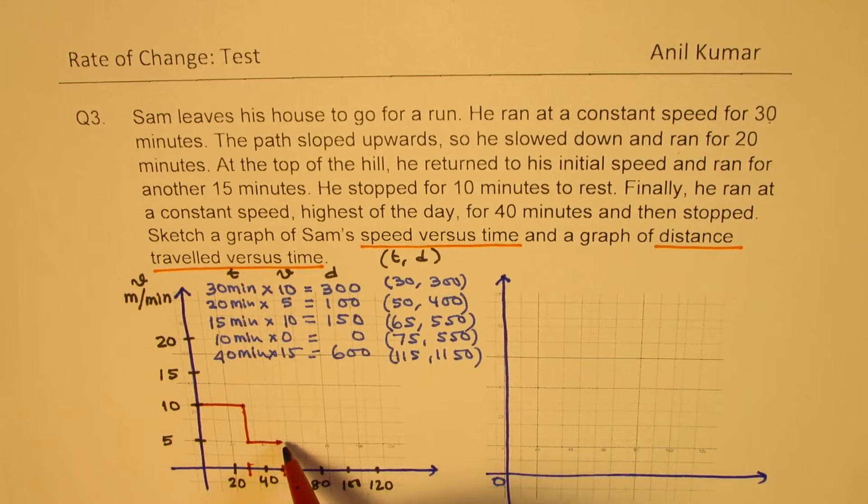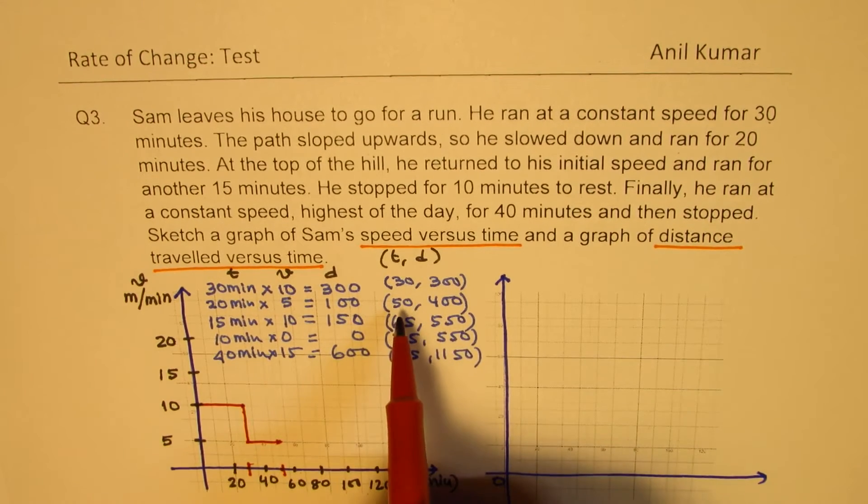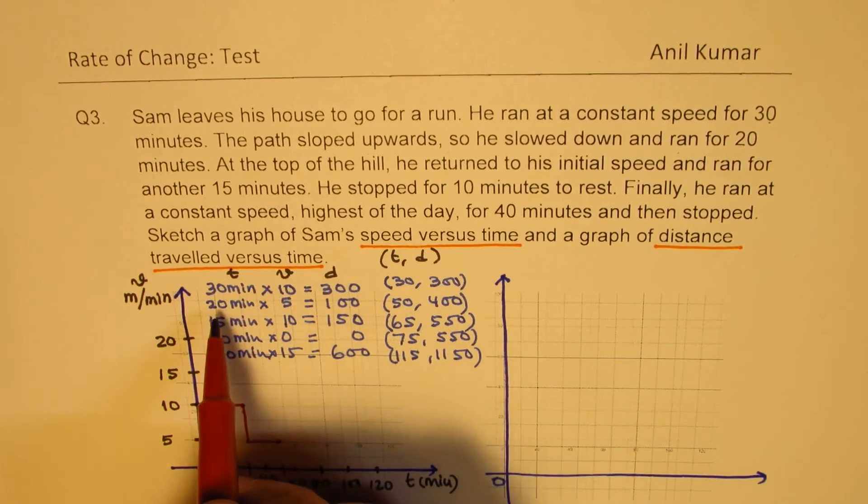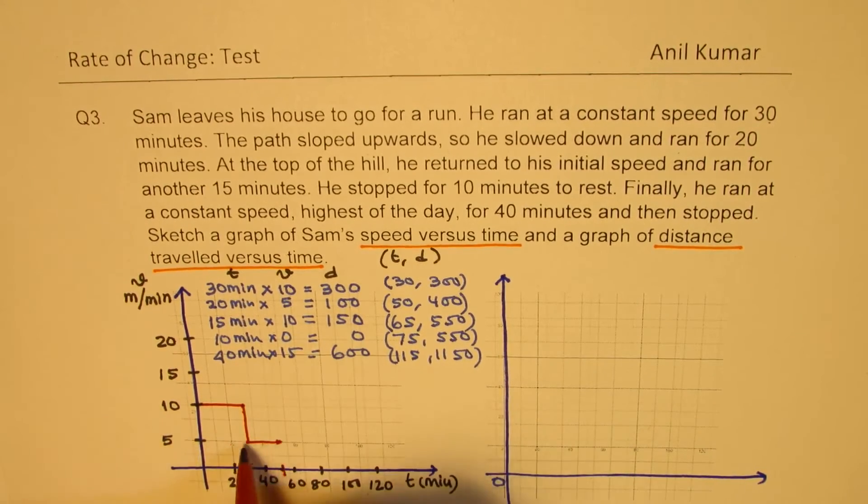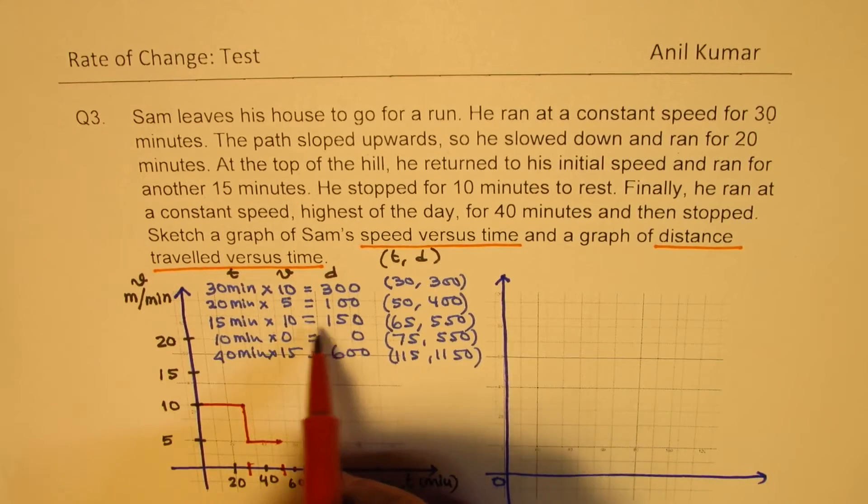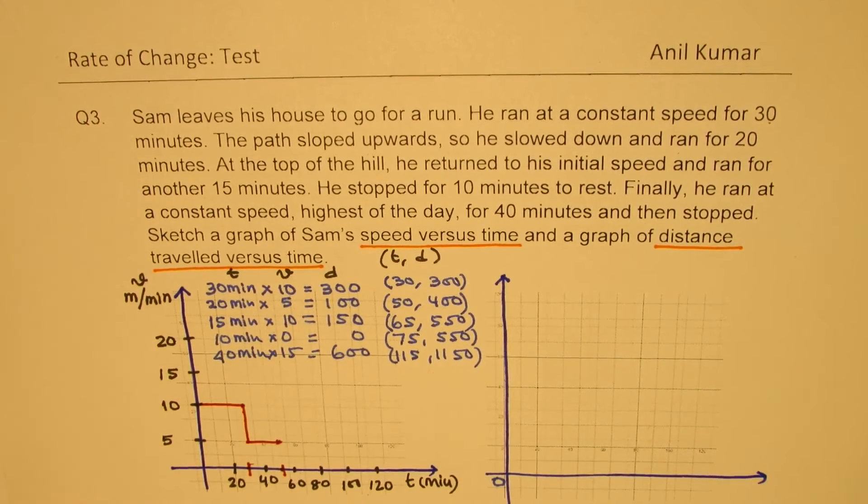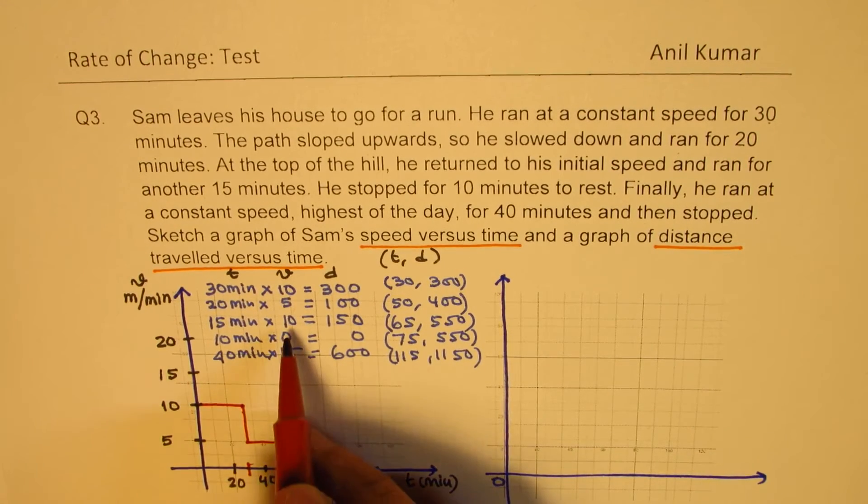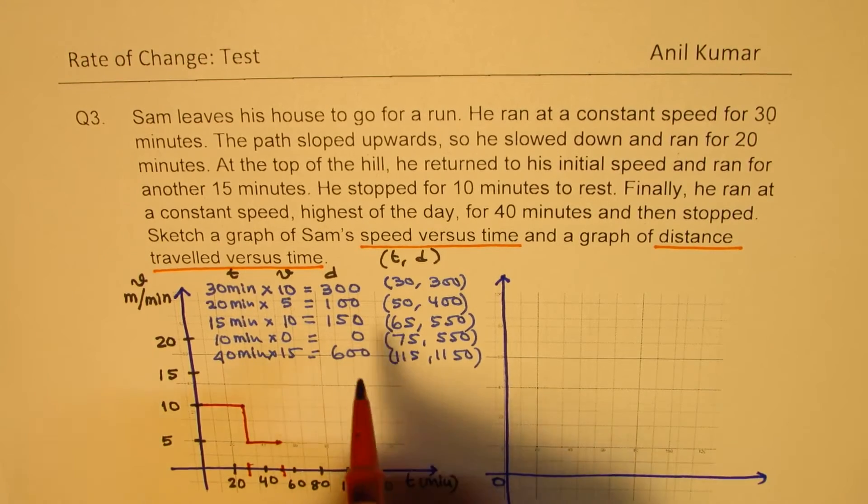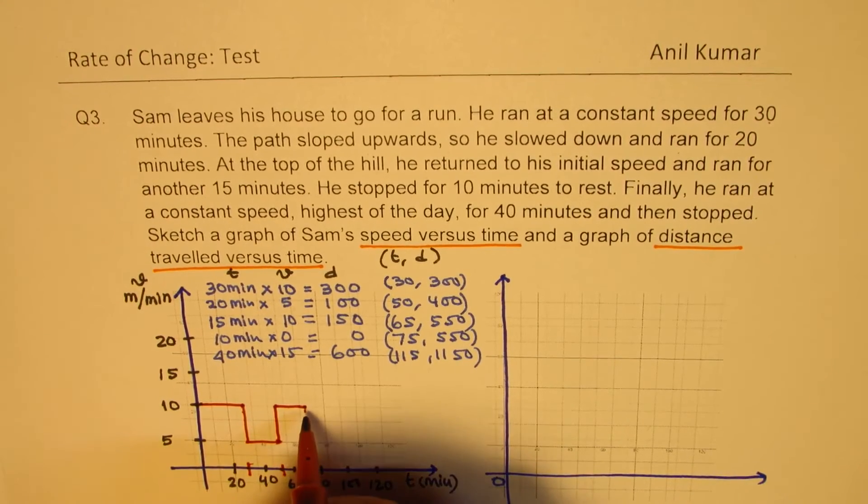So based on this we can now sketch our velocity time graph. Time is in minutes. So we were already here at 50, 400. 20 minutes 500. So that is where it is. Next 15 minutes 150 is the distance covered but 15 minutes we are only traveling at the speed of 10 back to 10. So back to 10 for 15 minutes which will take you to 65. So 65 is here. So we'll go up and back to 10 to 65. So that is at 65.